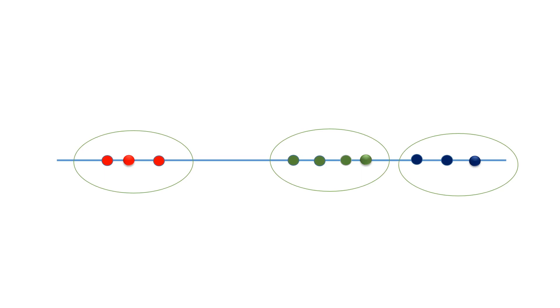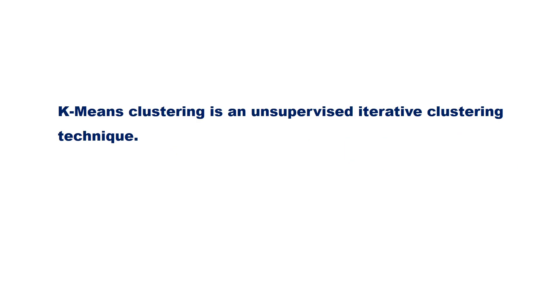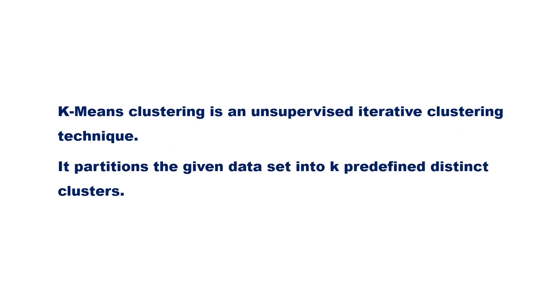The algorithm we have used in this example is known as k-means clustering, where k denotes the number of clusters. K-means clustering is an unsupervised iterative clustering technique. It partitions the given dataset into k predefined distinct clusters.